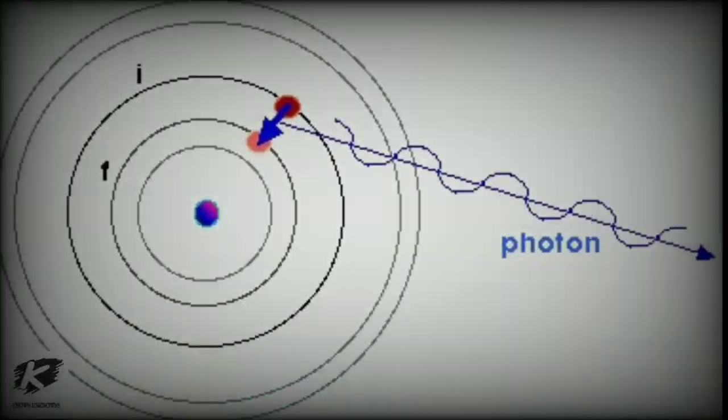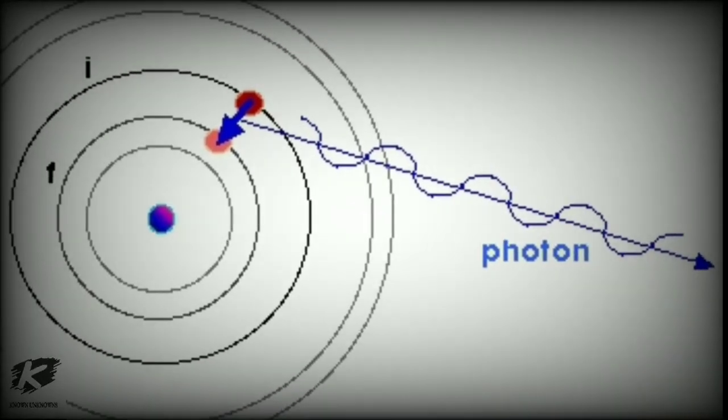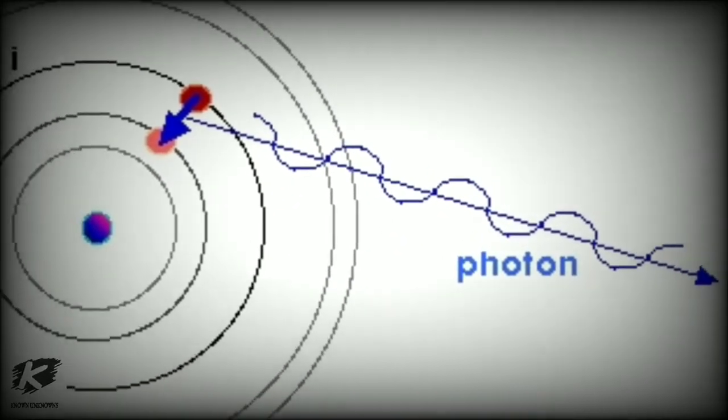It takes femtoseconds for chemical bonds to break and form, but it takes zeptoseconds for light to travel across a single hydrogen molecule, H2.